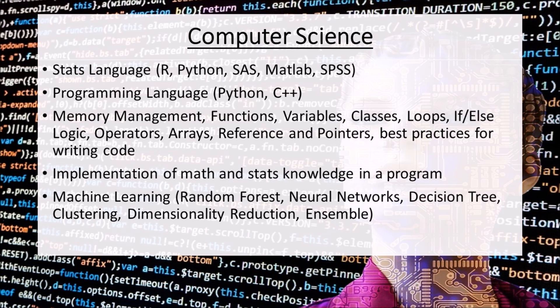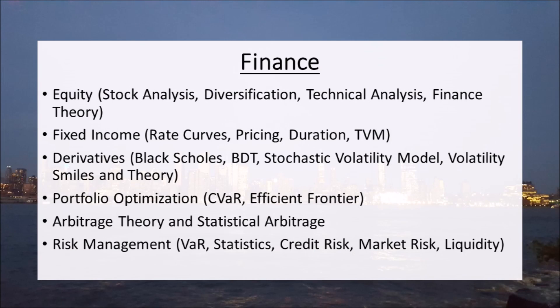The last part is finance. Knowing finance is crucial. I see a lot of quants that have the math, statistics, and computer science but don't really understand the financial theory. You need to know what you're modeling. Time value of money is huge. Fixed income, equity, and derivatives are the three main asset categories you need in finance. For fixed income you need to know duration, how to model curves, and convexity of interest rate curves.